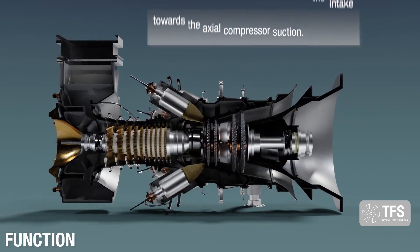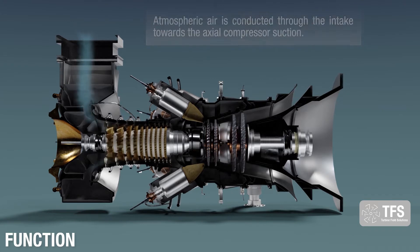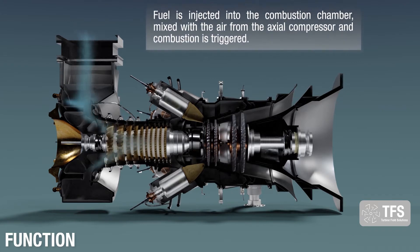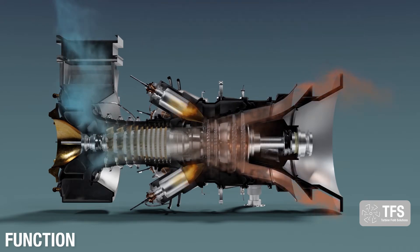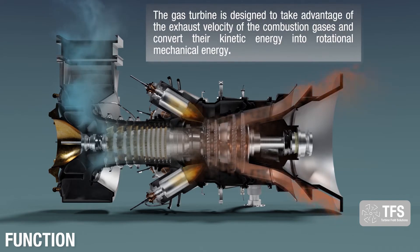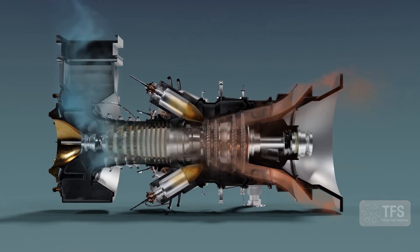Functioning. Atmospheric air is conducted through the intake towards the axial compressor suction. Fuel is injected into the combustion chamber, mixed with the air from the axial compressor, and combustion is triggered. The gas turbine is designed to take advantage of the exhaust velocity of the combustion gases and convert their kinetic energy into rotational mechanical energy.